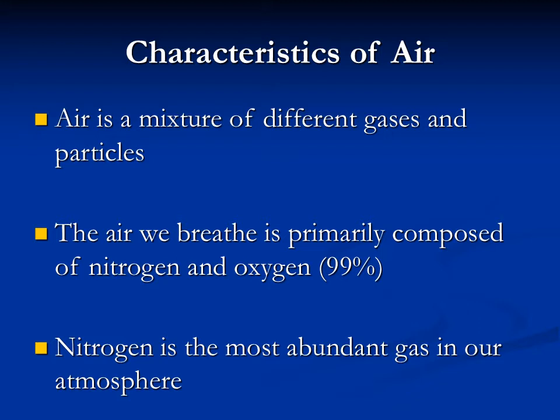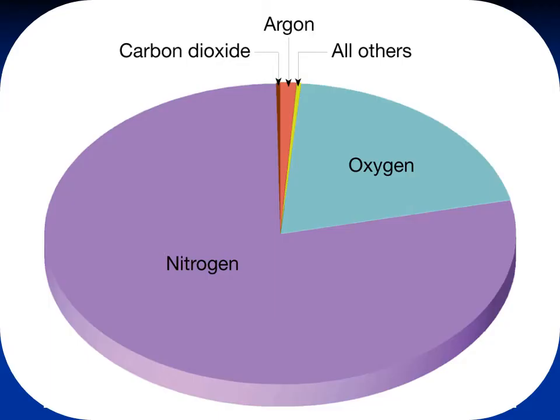We started to talk about the characteristics of air when we covered the layers of the atmosphere — here's a quick refresher. Air is a mixture, and for eighth graders reviewing for chemistry, remember a mixture is a physical change, meaning the components are not chemically combined. In air, there's a mixture of different kinds of gases and particles. The air we breathe is primarily nitrogen — about 78% — and oxygen.